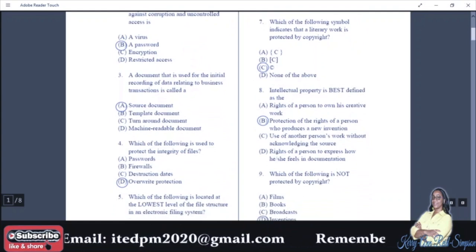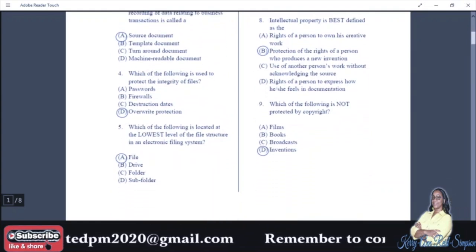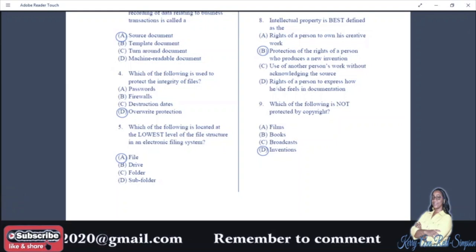Number eight: intellectual property is best defined as: A: the rights of a person to own his creative work, B: protection of the rights of a person who produces a new invention, C: use of another person's work without acknowledging the source, D: rights of a person to express how he or she feels in documentation. Your answer is B, intellectual property is all about the protection of the rights of a person who produces a new invention.